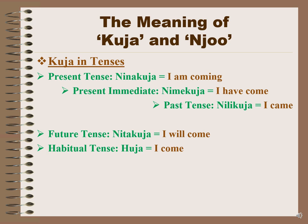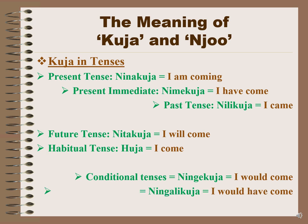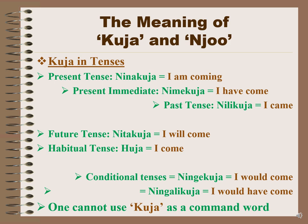The habitual tense is huja, meaning 'I come' or 'I always come' — huja mara kwa mara. The conditional tenses are ningekuja, meaning 'I would come,' and ningalikuja, meaning 'I would have come.' One cannot use kuja as a command word; it is a verb.